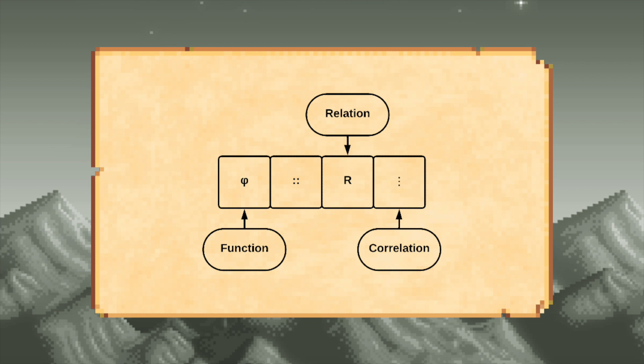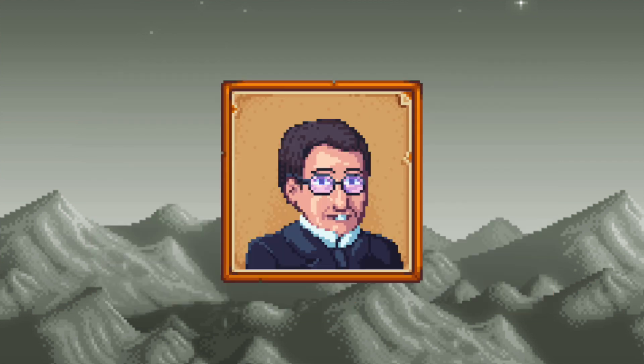Earlier I said that analyses break things down according to their relationships. The technical term for these is function, marked with a lowercase phi. When it comes to R and the vertical ellipses, these are the components that functions as a class are analyzed into, referring to relations and correlations respectively.